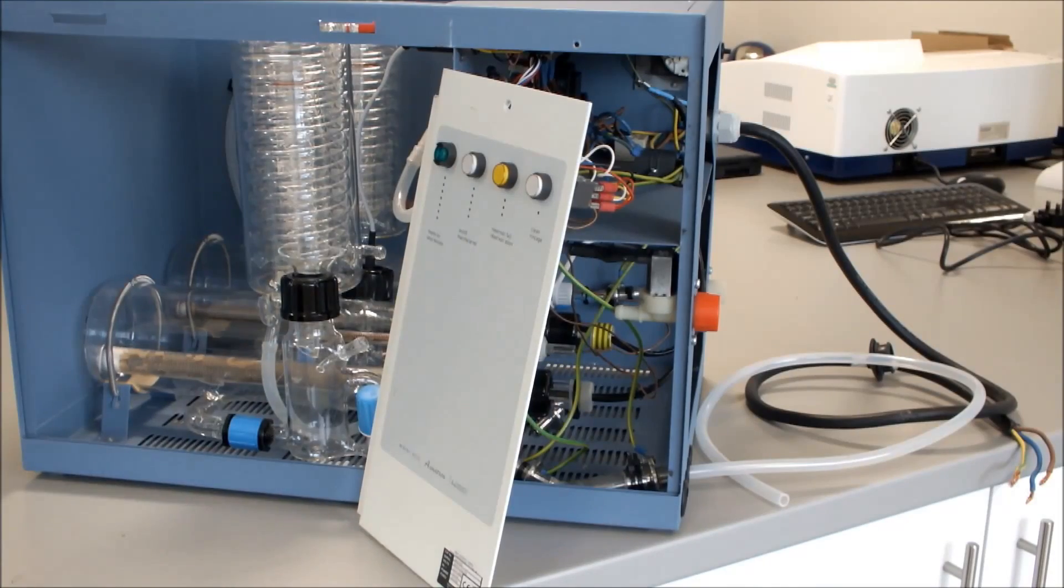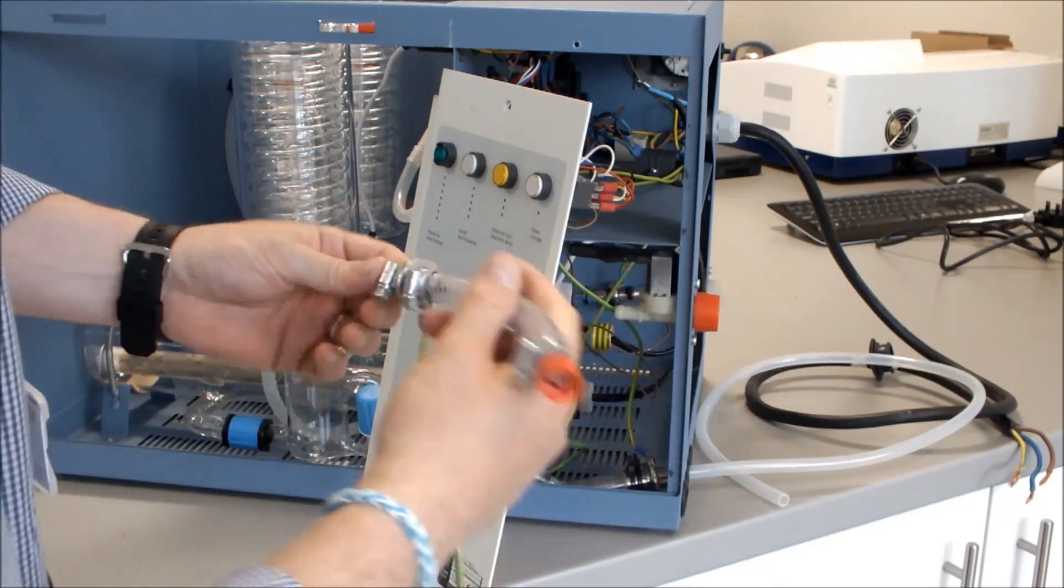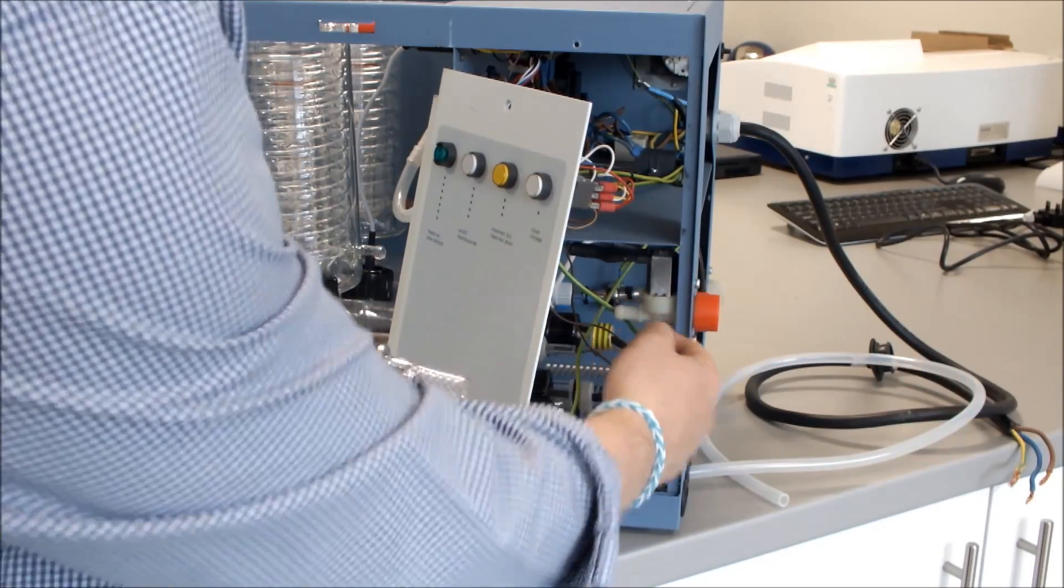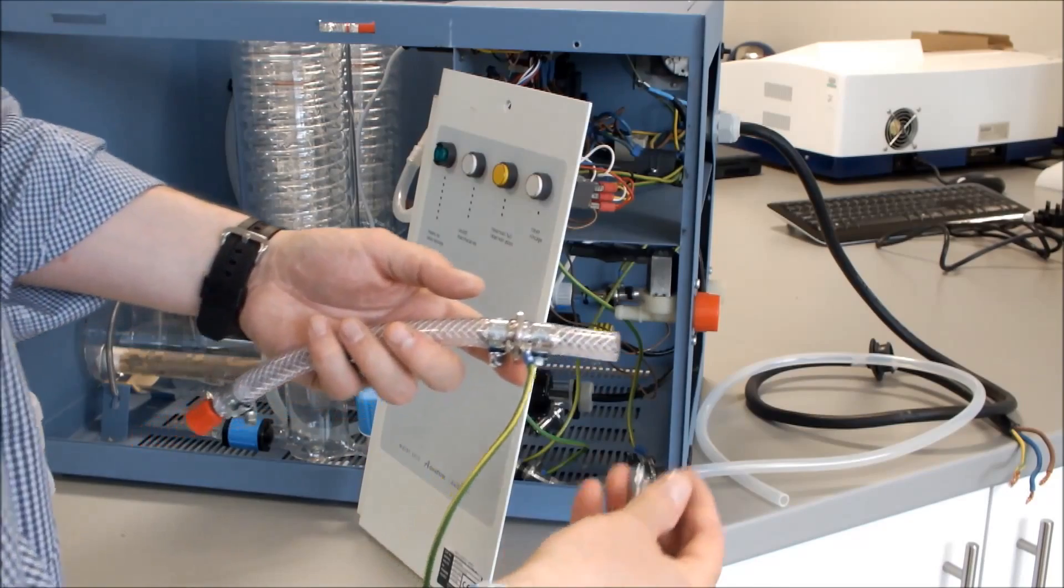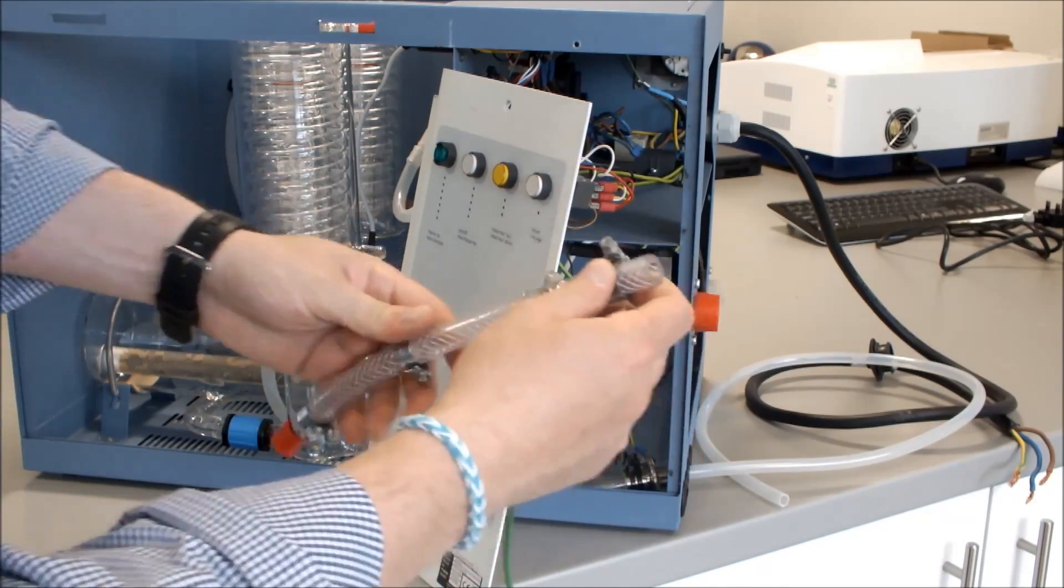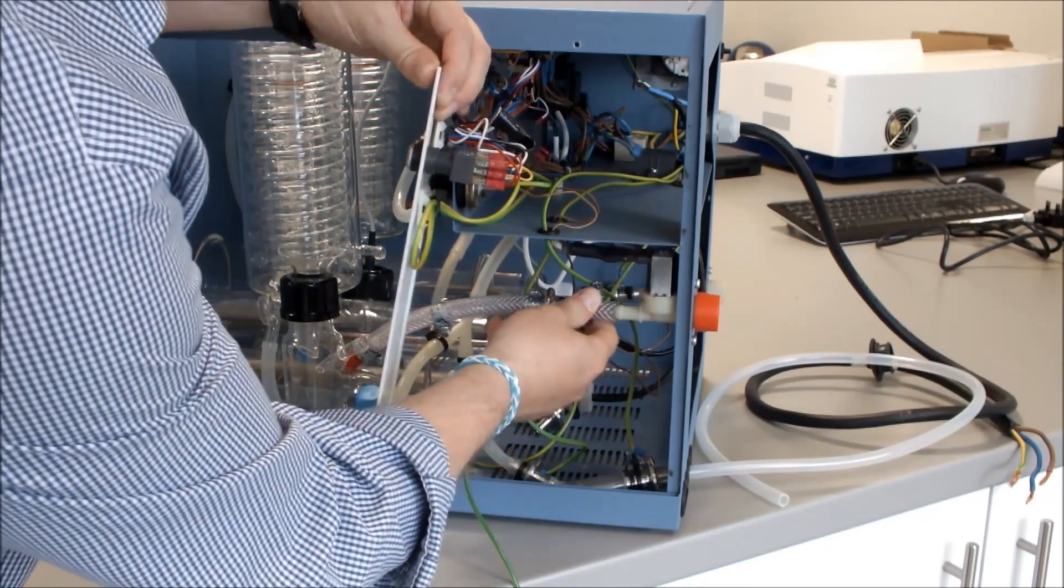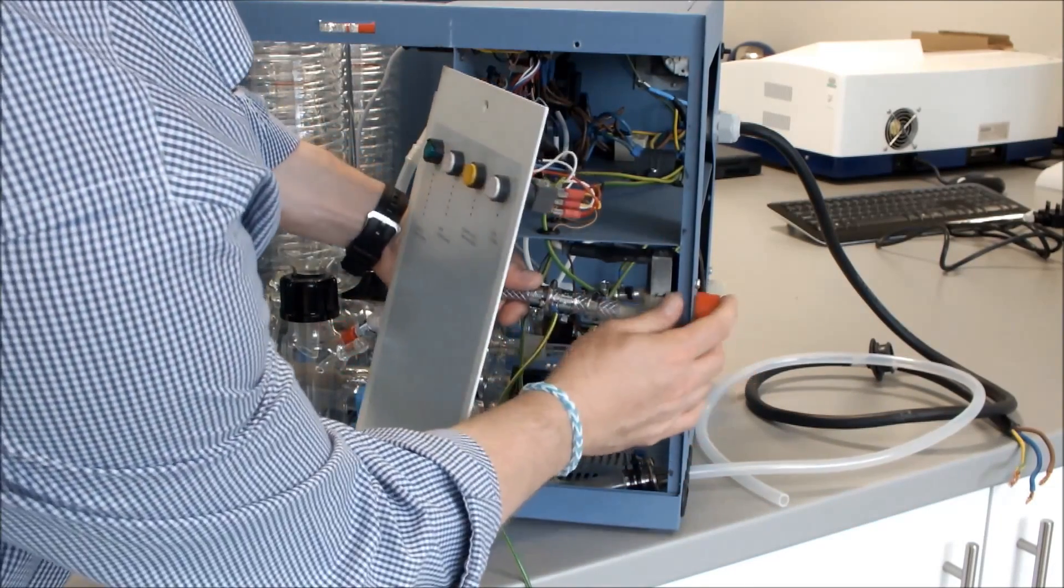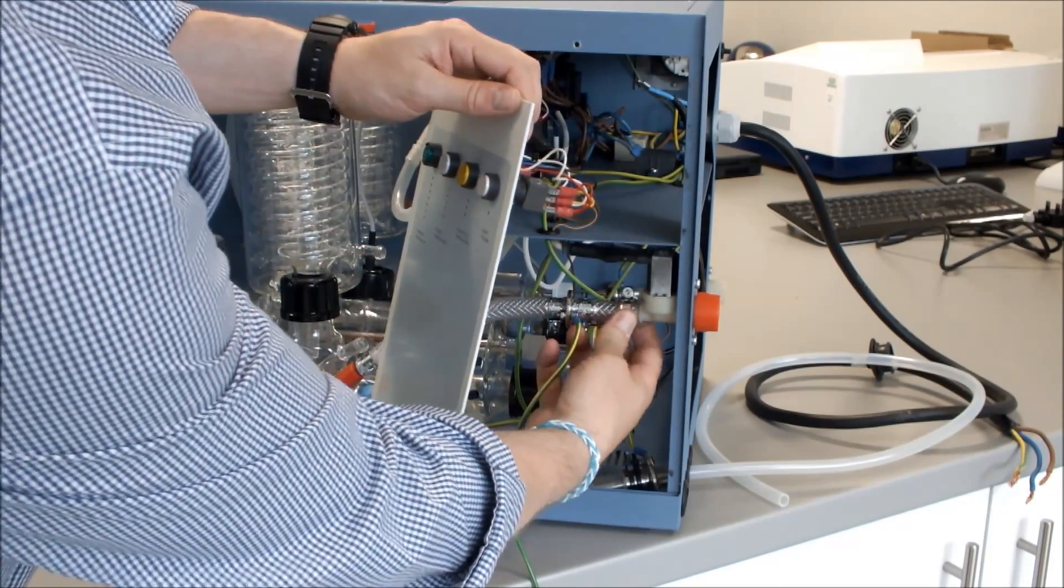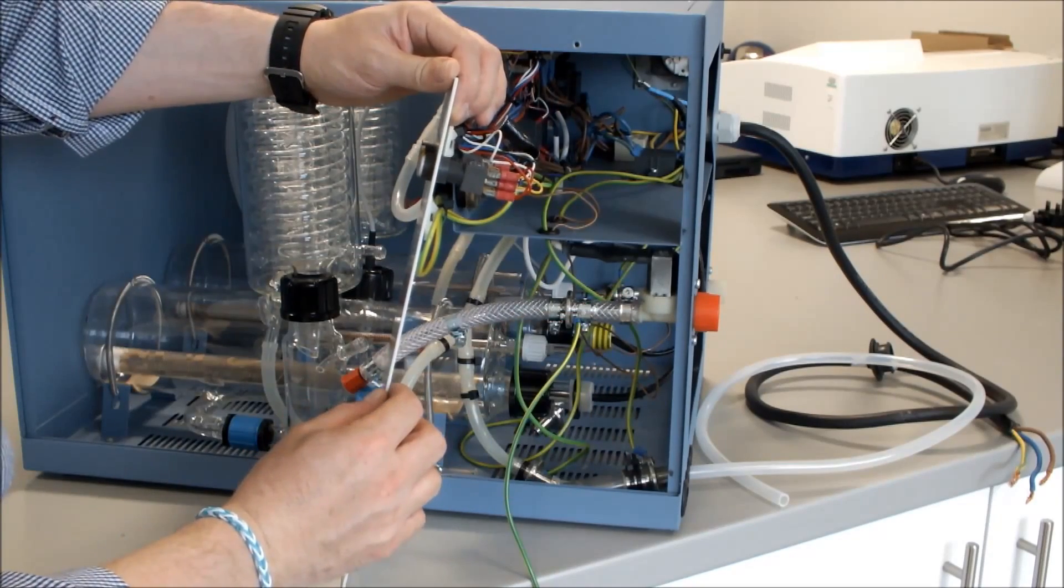The next thing to do is to connect our deioniser pipe assembly to our water inlet solenoid. First, we fit our jubilee clip onto our tubing. We then fit the tubing onto the solenoid and tighten up the jubilee clip.